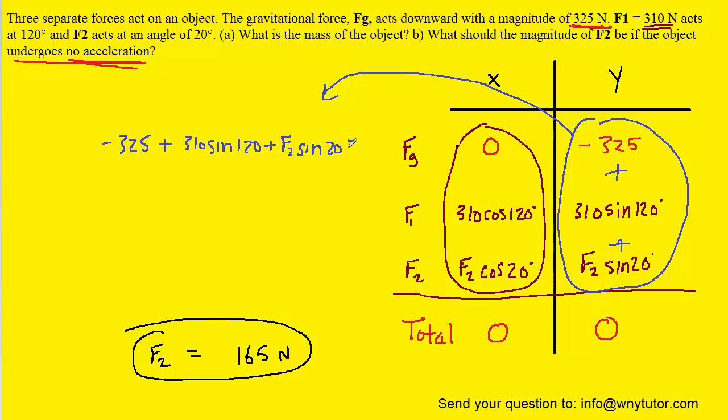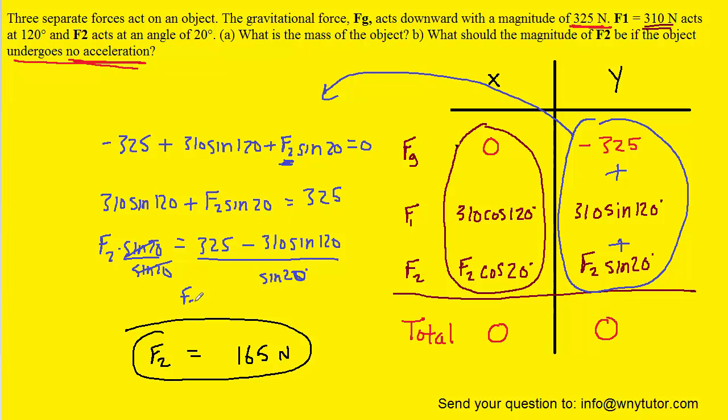Now once again, we're trying to solve for F2, which is right here. So let's add the 325 over. We could then subtract this 310 sin 120 over to the right-hand side. And then finally divide both sides of the equation by sine 20 so that it cancels out on the left-hand side. So we'll cancel here. And then when you carefully type this expression into your calculator, you should obtain the same answer. You should get about 165 Newtons for the magnitude of F2, and so that confirms our previous answer.